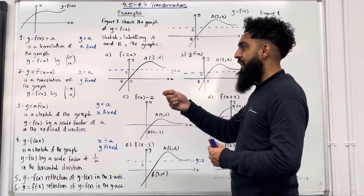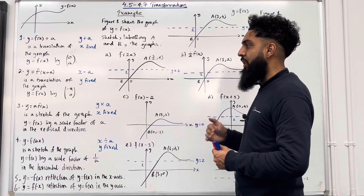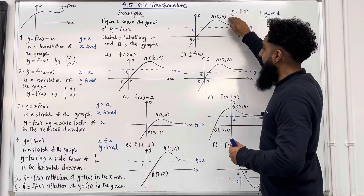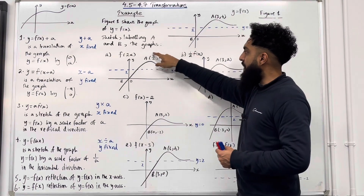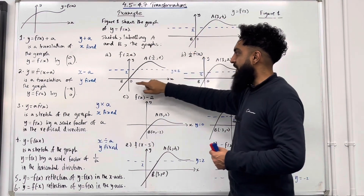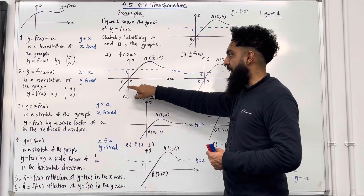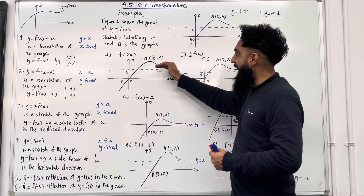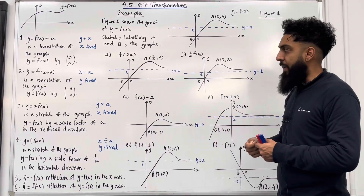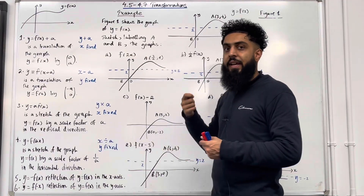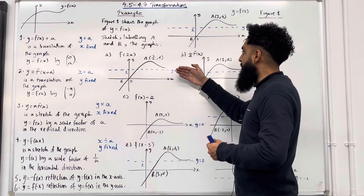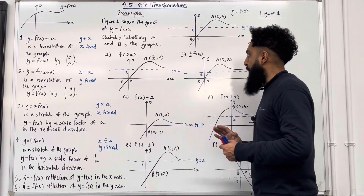You take the x coordinates, divide by 2, keeping y fixed. So my new coordinate a will become (3/2, 4). My coordinate b will remain the same at the origin. The asymptote is not affected because this transformation only affects the x-coordinates, so the asymptote is still y equal 2.